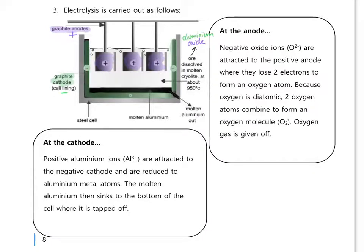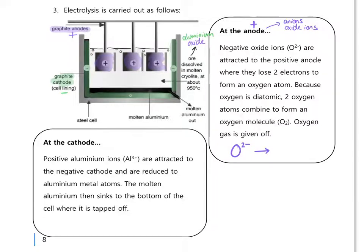Let's look at what happens at the anode. The anode is positively charged, so it's the anions that will be attracted to it. In aluminium oxide, the anion is the oxide ion. Our oxide ions are attracted to the positive anode. At the anode we see oxidation — loss of electrons — because oxide ions are negatively charged and need to lose electrons to form atoms.